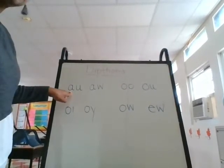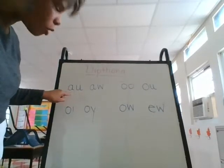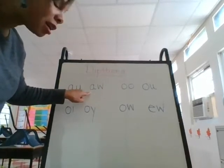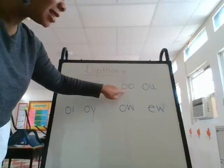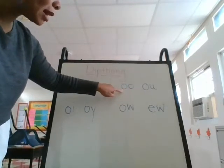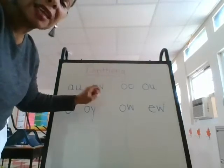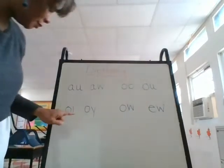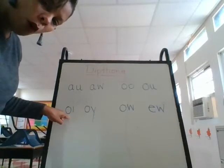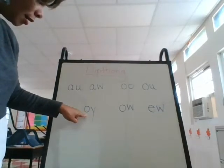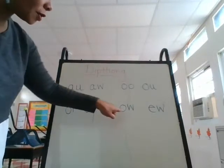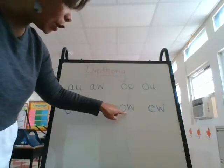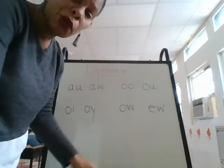Whenever you see the letters A-U together, it makes the sound 'aw,' like 'caught.' Whenever you see O-O, this is a tricky one because it's going to have a few meanings — it can be 'oo,' like 'broom,' but it also can make the sound 'oo,' like 'stood.' O-U makes 'ow,' like 'cloud.' O-I makes 'oi,' like 'oil.' O-Y makes 'oi,' like 'oyster.' O-W is tricky as well — it could be 'ow,' or it could be 'oh,' like 'own' or 'blow.' And E-W is 'oo.'